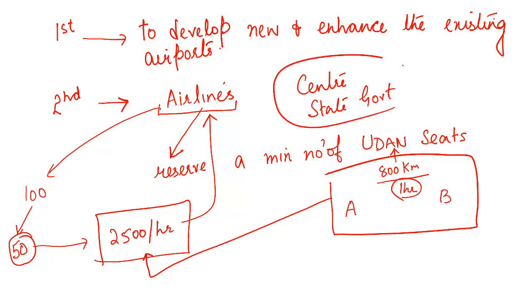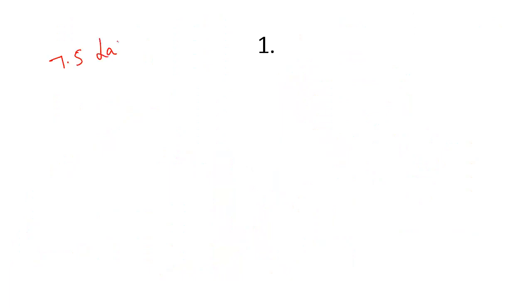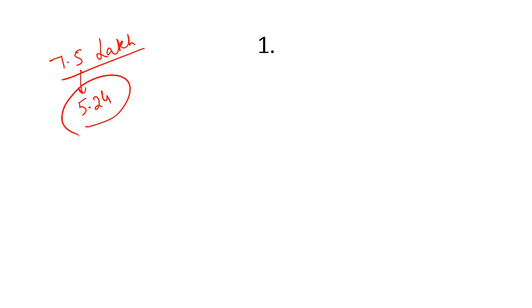The Hindu filed an RTI application which revealed that 7.5 lakh seats were reserved under the UDAN scheme. Out of these 7.5 lakh seats, 5.24 lakh seats were sold. That means there is much better demand for airline tickets going into remote, hilly, island, or security-sensitive areas. That is one thing this newspaper article talks about.